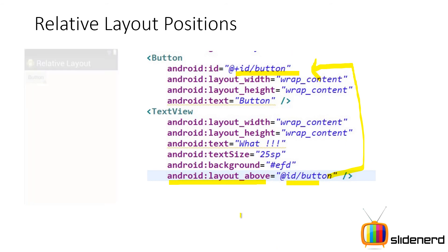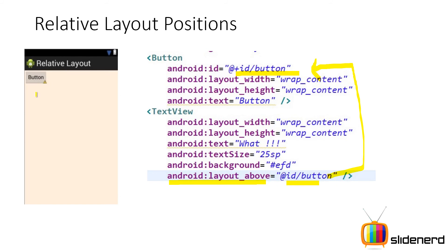But if you see the output, you'll be shocked — there is only a button and no text view. What's going on? By default your button has been placed in the top left corner. So when you say the text view should appear above the button, you're trying to push the text view off the screen. Android will create the object but won't draw it, so you won't be able to see it.